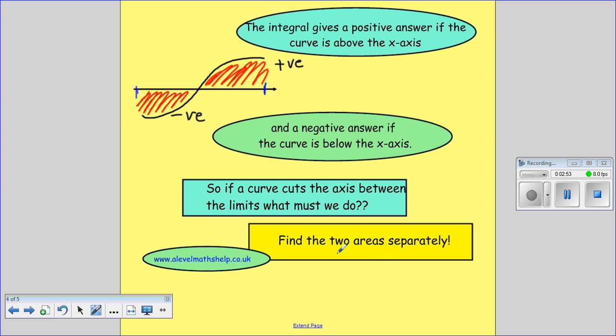So if we integrate it all the way from here to here, you could get a result of zero because the two bits cancel each other out. So what we do is find the two areas separately and then add them, but disregarding the negative sign.